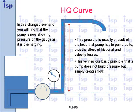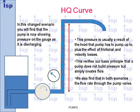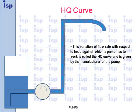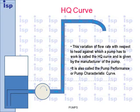This verifies our basic principle that a pump does not build pressure but simply creates flow. We also find that in both scenarios, the flow rate through the pump varies. This variation of flow rate with respect to head against which a pump has to work is called the HQ curve, given by the manufacturer. It is also called the pump performance or pump characteristic curve.